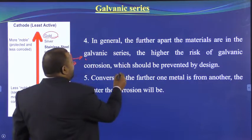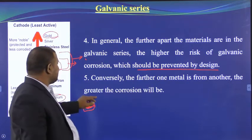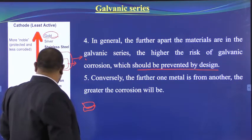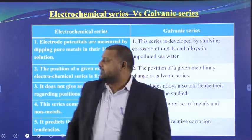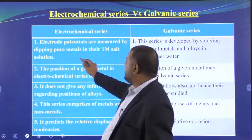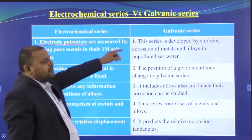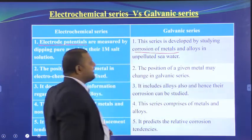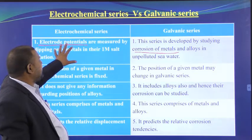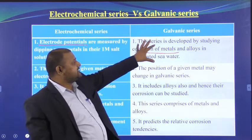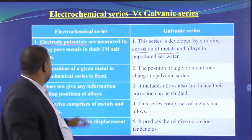You should always prevent galvanic corrosion by using proper design. The farther apart two metals are in the galvanic series, the greater the corrosion. Now we shall discuss the differences between the electrochemical series and the galvanic series. The electrochemical series gives electrode potentials, while the galvanic series is obtained by studying the corrosion of metals and alloys in seawater.